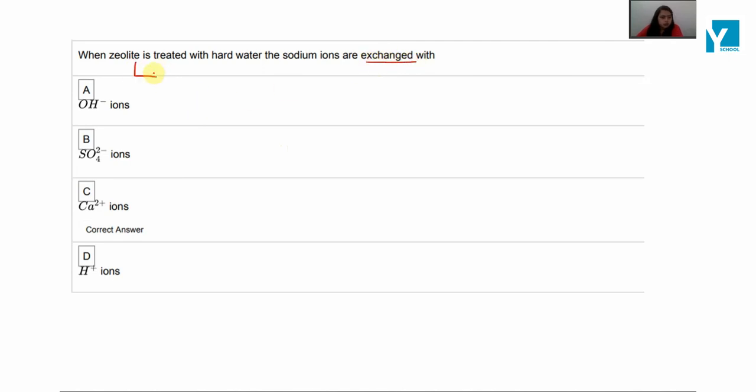So first of all, zeolite - this is actually hydrated sodium aluminum silicate. With the help of molecular formula, it can be represented as NaAlSiO4 with some water molecules.